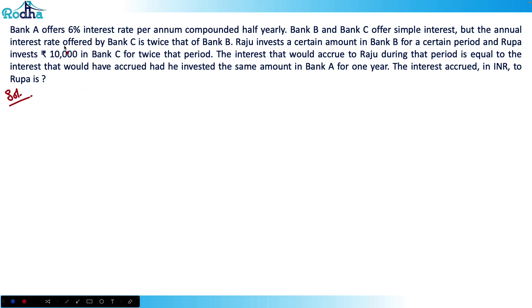Let's look at this question. Bank A offers six percent interest rate per annum compounded half-yearly. Bank B and C offer simple interest, but the annual rate offered by Bank C is twice that of Bank B. Raju invests a certain amount in Bank B for a certain period, and Rupa invests rupees 10,000 in Bank C for twice that period.